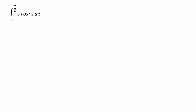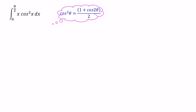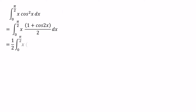The cos squared theta value we can write as 1 plus cos 2 theta over 2. Using this equation, we can write cos squared x as 1 plus cos 2x over 2. The denominator value 2 is a constant, so we can bring this denominator 2 value outside of the integral. Then we have half times integral of x within bracket 1 plus cos 2x.